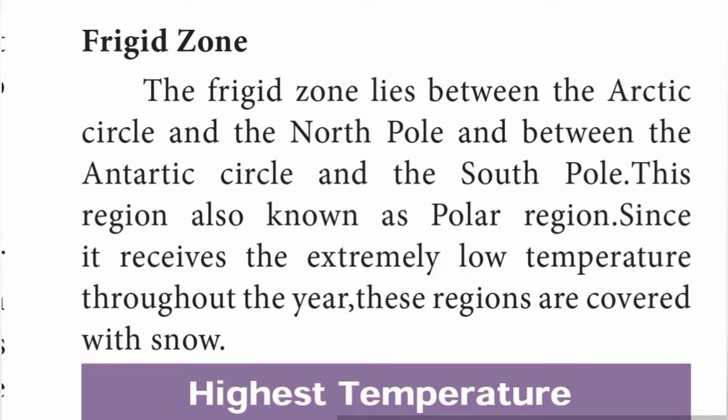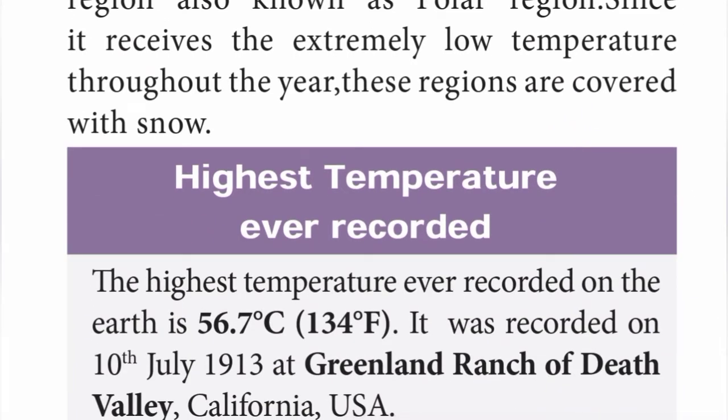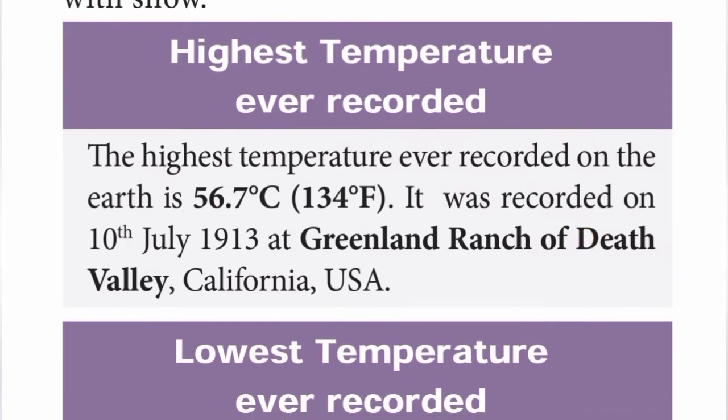The frigid zone lies between the Arctic Circle and the North Pole, and between the Antarctic Circle and the South Pole. This region is also known as the polar region. It receives extremely low temperature throughout the year, and these regions are covered with snow.